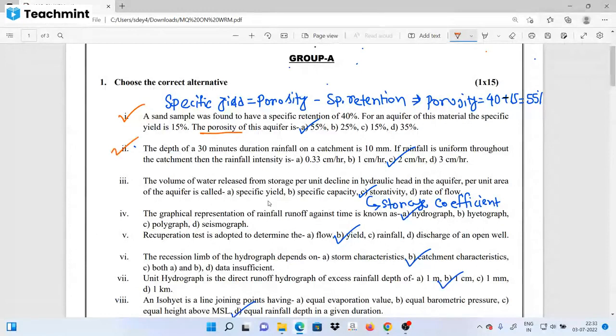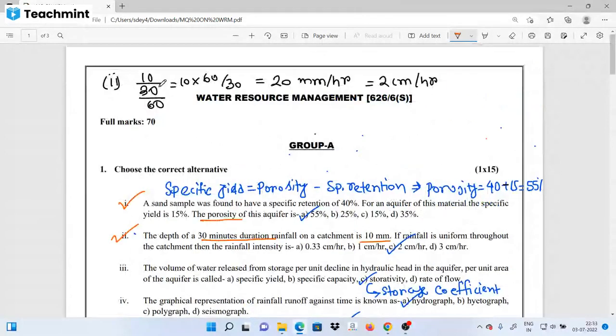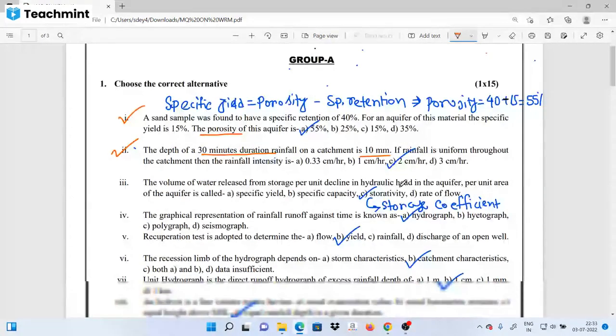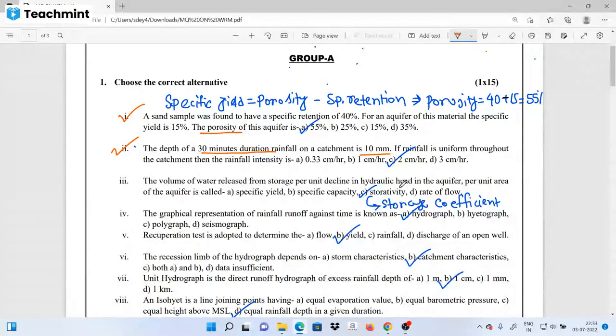Next question is about rainfall depth. The depth of 30 minute duration rainfall on a catchment is 10 mm. We are talking about rainfall intensity. The formula for rainfall intensity is total depth by total time. Total depth is 10 mm, total time is 30 minutes. The unit is centimeter per hour. Converting 10 mm in 30 minutes to hourly rate gives us 20 mm per hour.